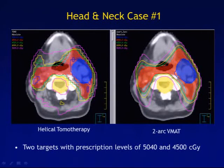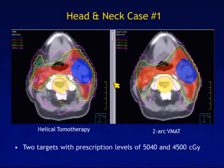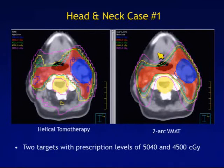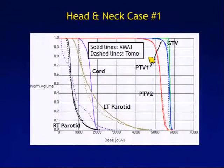When VMAT was first rolling out clinically, we wanted to compare it to what we considered the gold standard of rotational IMRT — tomotherapy. We did a collaborative study with the University of Virginia where we took six prostate cases, six head and neck cases, and six lung cases, and compared fixed-field IMRT, VMAT, and tomotherapy in terms of plan quality, delivery time, and delivery accuracy. For a sample head and neck case with two prescription levels, the helical tomotherapy plan and the two-arc VMAT plan were generally very comparable, and looking at the DVH, it was hard to tell the difference.